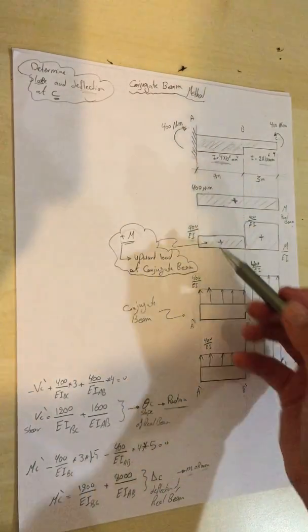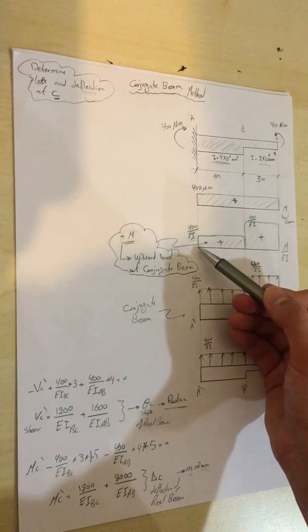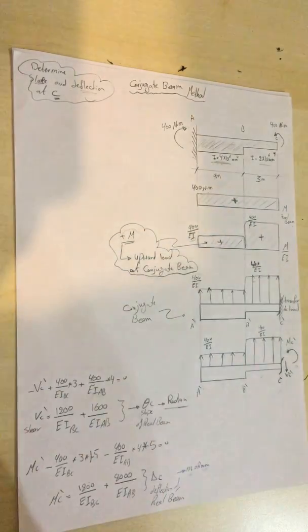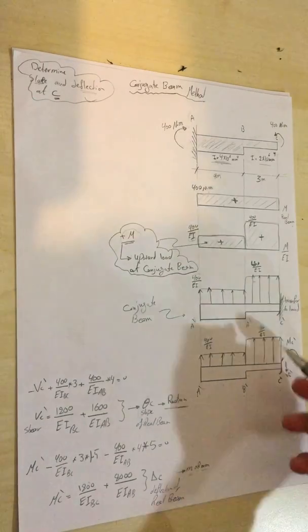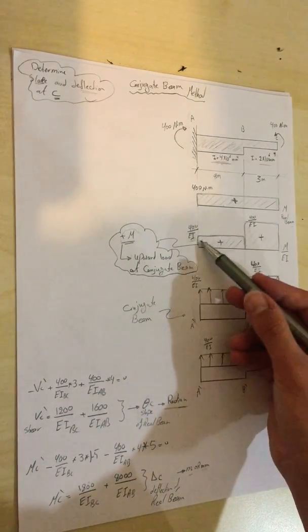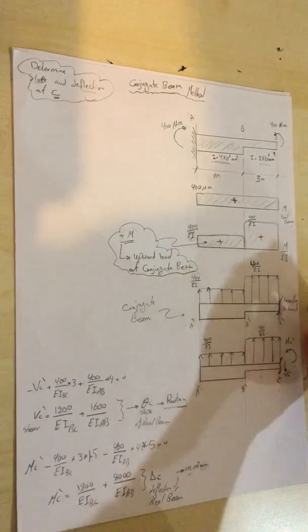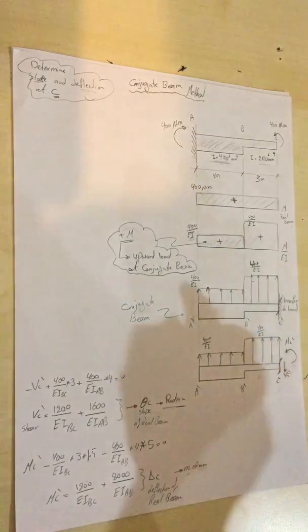Now I will change this moment divided by EI into applied load on the conjugate beam. I'll draw the same cantilever beam that I had, but I will change this fixed end into a free end and this free end into a fixed end at C.